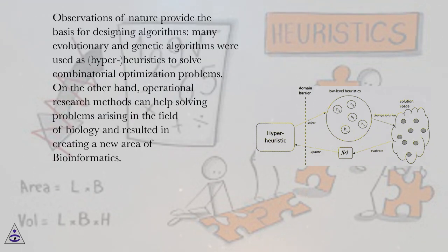Observations of nature provide the basis for designing algorithms. Many evolutionary and genetic algorithms were used as hyper-heuristics to solve combinatorial optimization problems. On the other hand, operational research methods can help solving problems arising in the field of biology and resulted in creating a new area of bioinformatics.